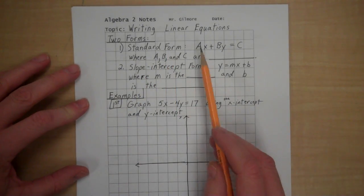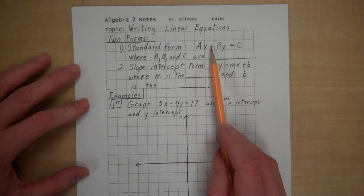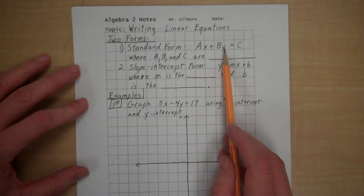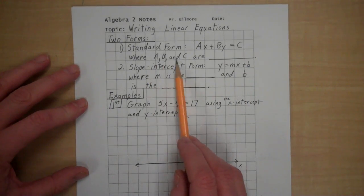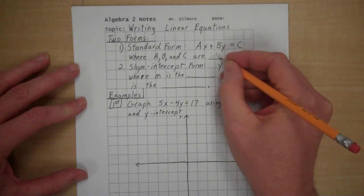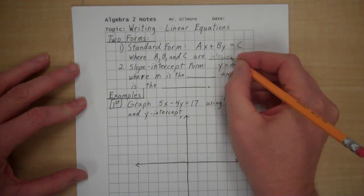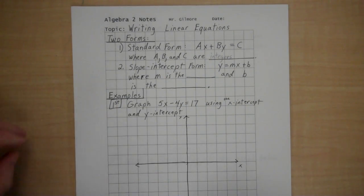The first form is called standard form, and ax, where a is the coefficient of x, plus by, b is the coefficient of y, equals c, which is some constant, and a, b, and c are integers. When you want to write it in that way, you can make it so that you're not dealing with fractions or decimals, you can create it so it's in that form.